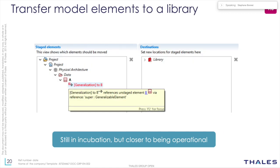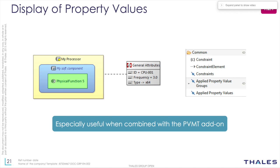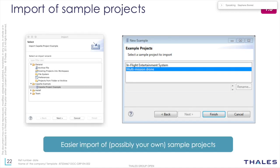Last year we introduced a tool in incubation for transferring elements between projects and libraries. Bug fixes have been done and we hope to finalize it in 2019. Something that came with Capella 1.2.1 mid-2018: we're now able to display any property value on any diagram — much like constraints. This is especially useful when combined with the PVMT add-on, which I'll present shortly.